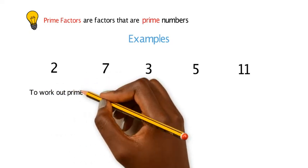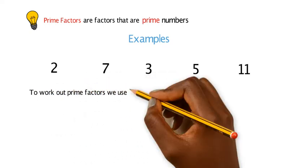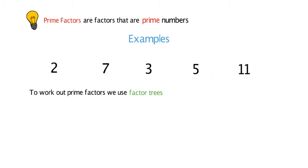To work out prime factors, we use factor trees, and this is why I've highlighted them in green. Example one, if you have 12, you need to think of multiples of 12. For example, we could have 3 and 4.